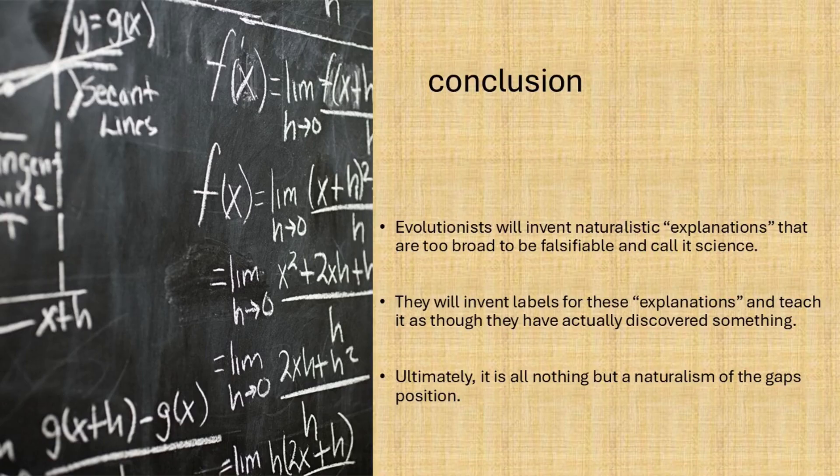In conclusion, evolutionists will invent naturalistic explanations that are too broad to be falsified and call it science. They will invent labels for these explanations and teach it as though they have actually discovered something. Ultimately, it is nothing but a naturalism of the gaps position.